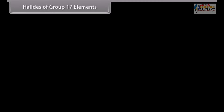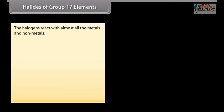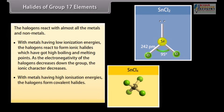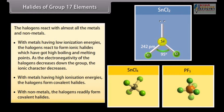The halogens react with almost all metals and non-metals. With metals having low ionization energies, the halogens react to form ionic halides with high boiling and melting points. As the electronegativity of the halogens decreases down the group, the ionic character decreases — for example, SnCl₂ and PbCl₂. With metals having high ionization energies, the halogens form covalent halides, for example SnCl₄ and PbCl₄. With non-metals, the halogens readily form covalent halides, for example PF₅ and PCl₃.